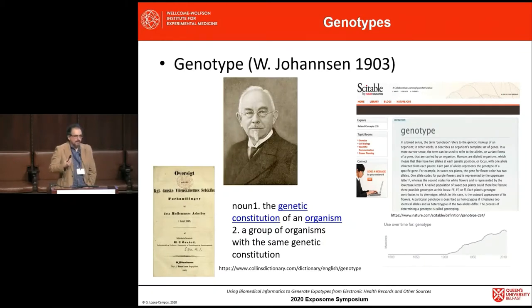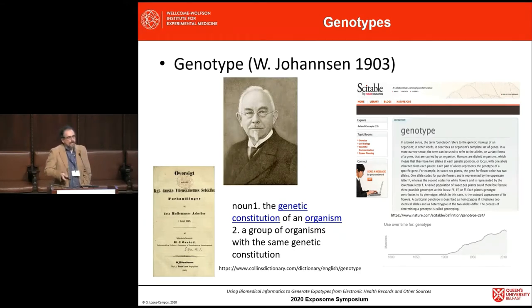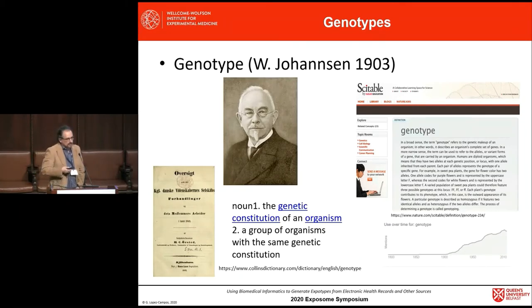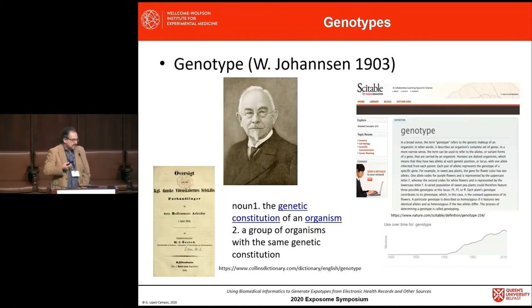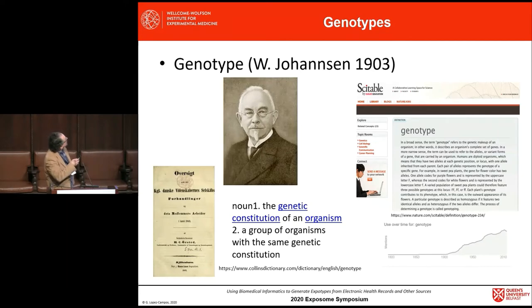During these sessions, we have been discussing omics and genotypes. But it could be interesting to go back a little bit and figure out when all these terms we are using were coined and where they come from. The genotype was coined a little bit more than 100 years ago, in 1903, by a Swedish scientist, Wilhelm Johansson, who coined the term genotype. By that time, this term was controversial. The definition is the genetic makeup of an organism, or a group of organisms with the same constitution.